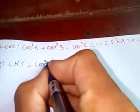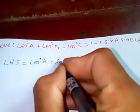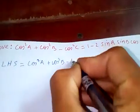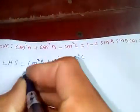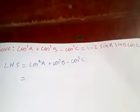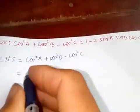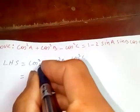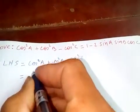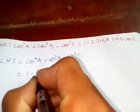square A plus cos square B minus cos square C. So let's now relate with sine. So cos²A can be written as 1 - sin²A